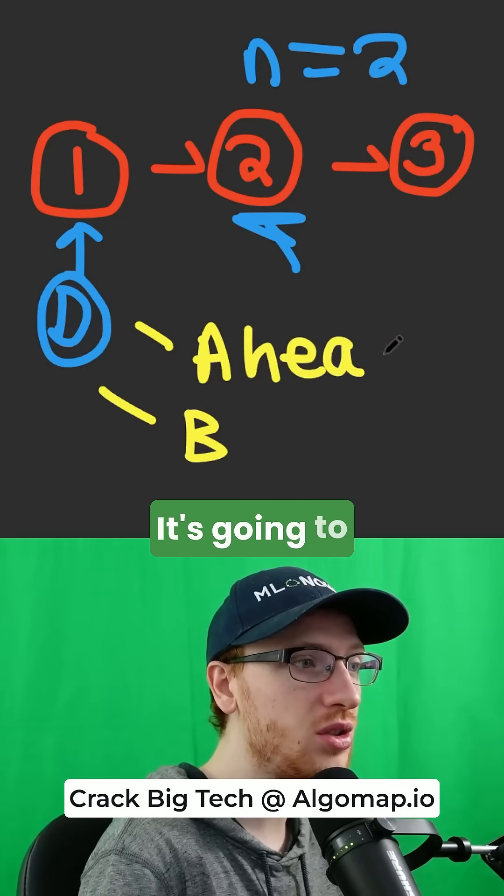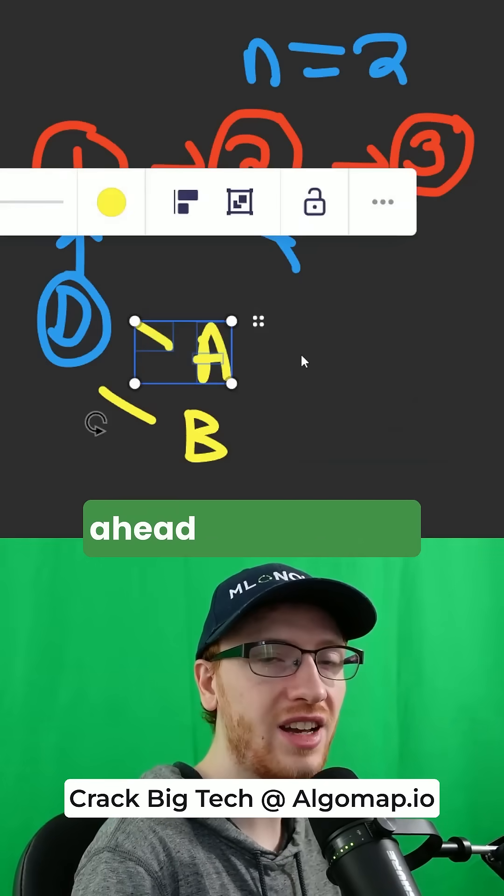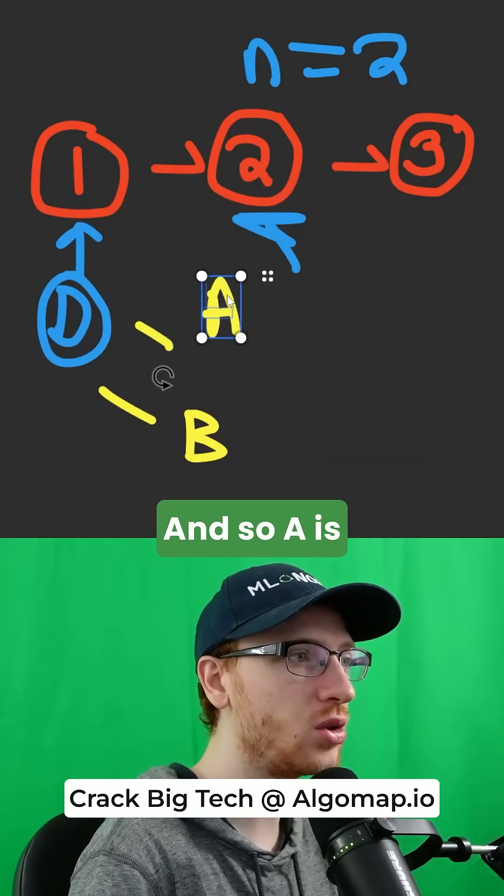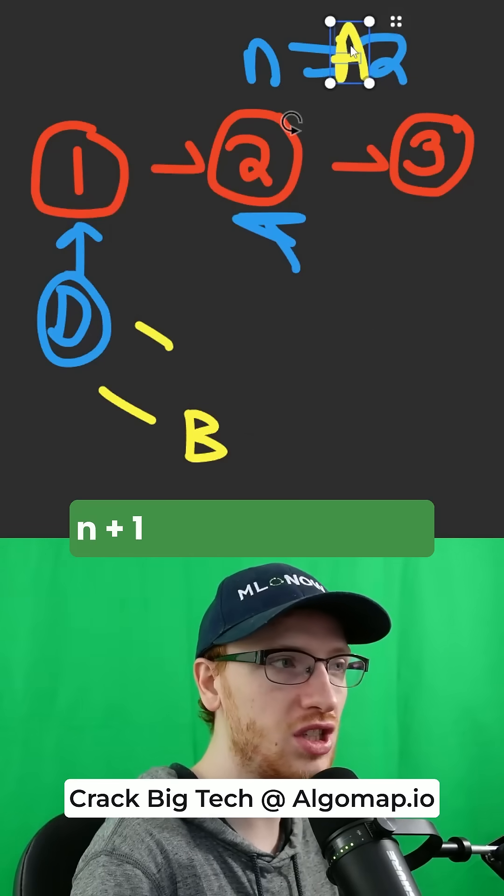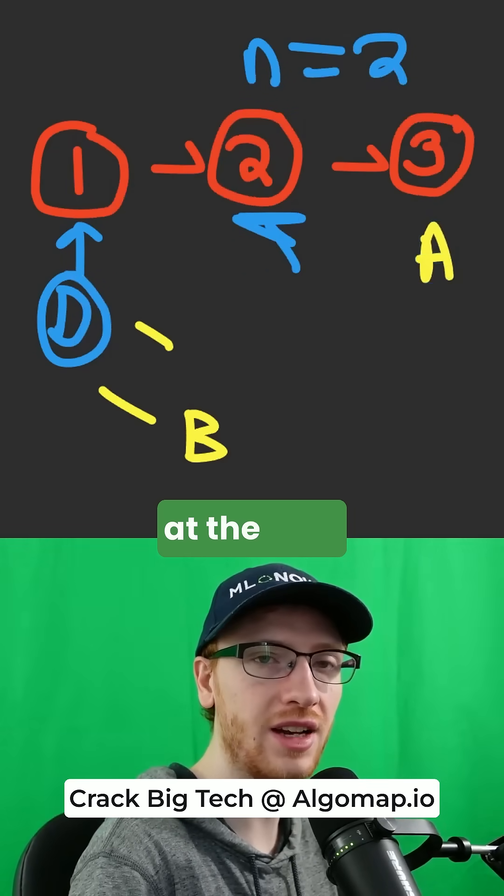a is for ahead. It's going to stay ahead of the other pointer behind. We're going to give ahead a head start, and so a is going to be n plus 1 positions ahead. It's going to go 1, 2, 3, and that's already making it at the end.